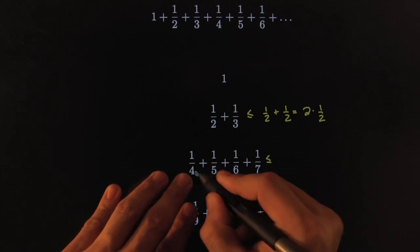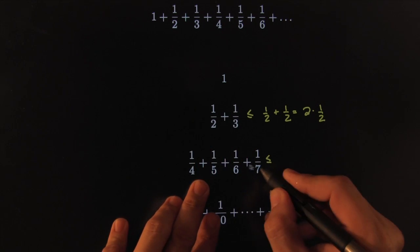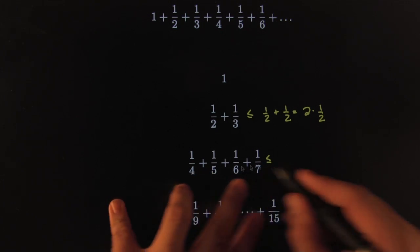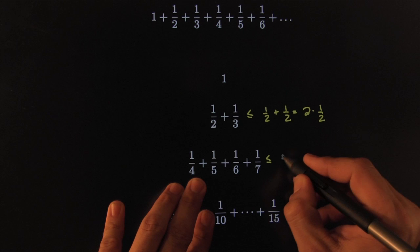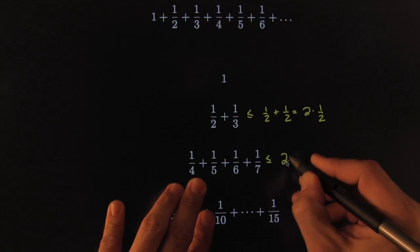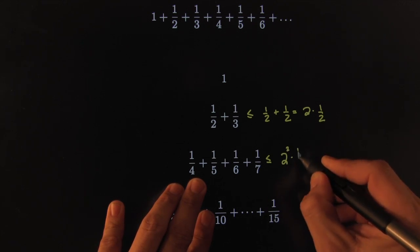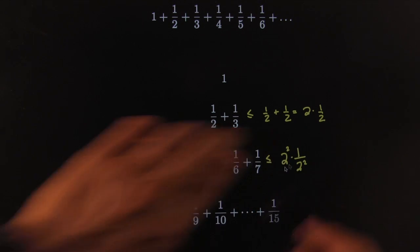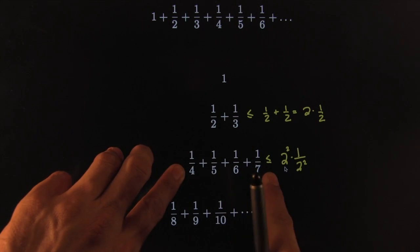This one over here, we've got 4 of them, 4 items. This is smaller than that. They're all smaller than or equal to 1 fourth. So this would be smaller than or equal to 2 squared times 1 over 2 squared. That's 4 of them, and they're all smaller than the first one 1 fourth because they're descending.